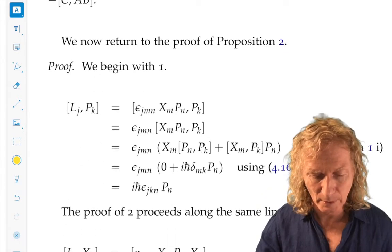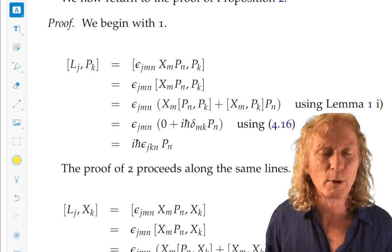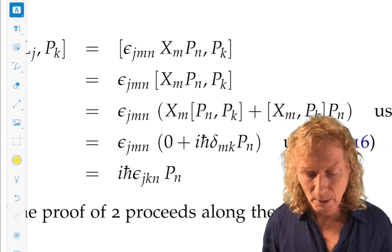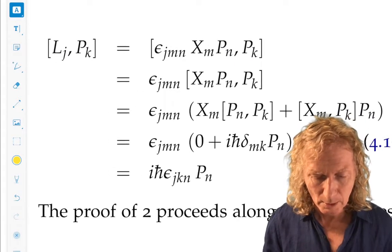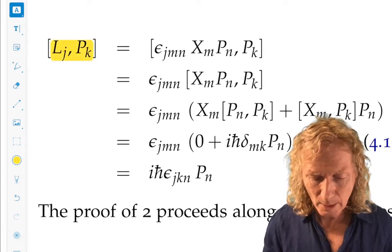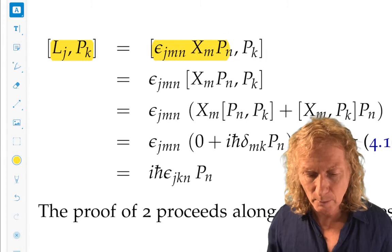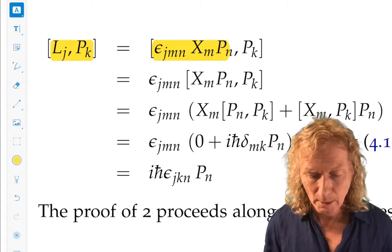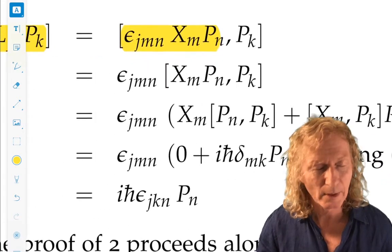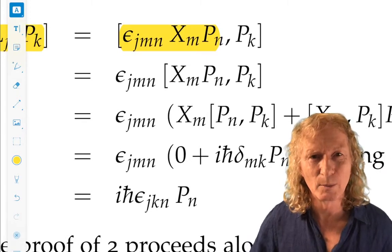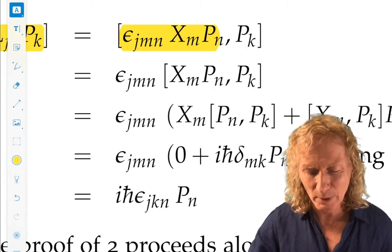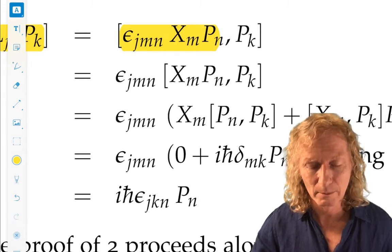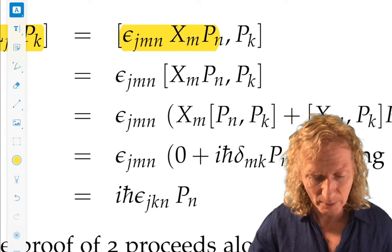So back to the proofs of these things. Of Proposition 2, Part 1, Part 2, and Part 3. These are really instructive calculations to do. So, commutator of L_j with P_k. We write down what L_j is in terms of X and P using the Levi-Civita symbol. Now the Levi-Civita symbol, sorry, I keep saying Kronecker Delta. The Levi-Civita symbol. The Kronecker Delta does come into play, but you should have been scratching your head. Why do I keep saying Kronecker Delta? The Levi-Civita symbol. Always epsilon_jkl, or jmn in this case.